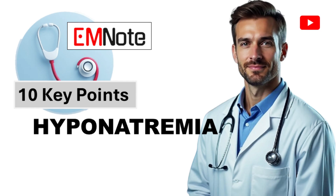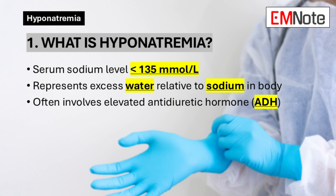10 Key Points About Hyponatremia. Point 1: What is hyponatremia? Hyponatremia is defined as a serum sodium level below 135 millimoles per liter. It signifies an imbalance where water in the body is in excess relative to sodium. This imbalance often involves elevated levels of the antidiuretic hormone, which promotes water retention.